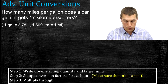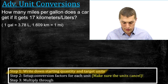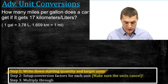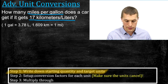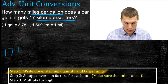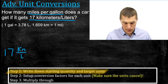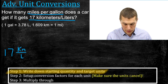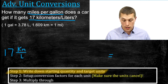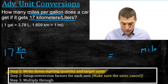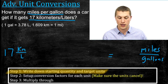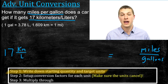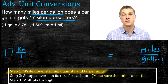I've broken it down into three steps. Step one says write down the starting quantity and target units. Our starting quantity is 17 kilometers per liter, and we want to go to miles per gallon. Remember that 'per' tells us it's miles over gallons — whenever you hear 'per,' put the first unit on top and the second unit on the bottom. So miles per gallon means miles over gallons, and kilometers per liter means kilometers over liters.